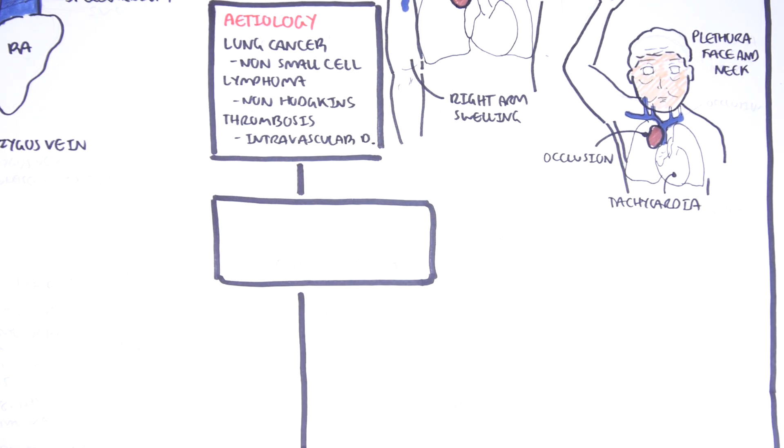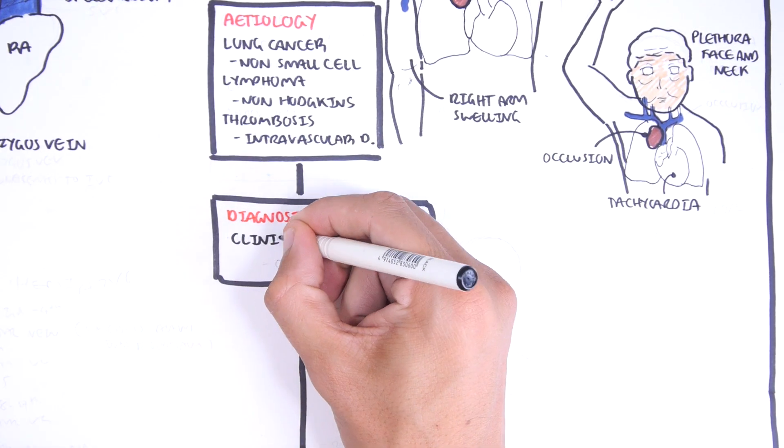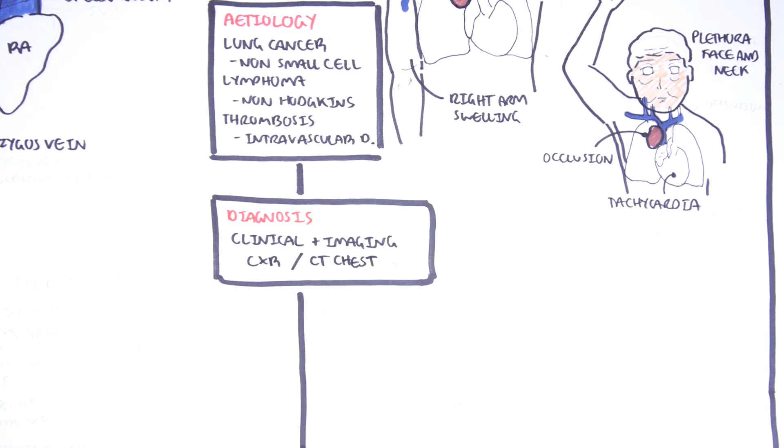The diagnosis of superior vena cava obstruction is typically clinical, supported by imaging such as chest x-ray and a CT of the chest.